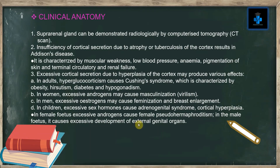Clinical anatomy: The suprarenal gland can be demonstrated radiologically by computerized tomography, or CT scan. Insufficiency of cortical secretion due to atrophy or tuberculosis of the cortex results in Addison's disease, characterized by muscular weakness, low blood pressure, anemia, pigmentation of skin, and terminal circulatory and renal failure.